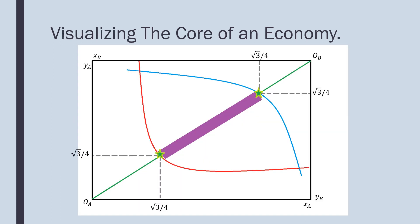In terms of visualizing this core, we have consumer A down in the bottom left and consumer B up in the right. We have our initial endowments which have been shifted to these points. This purple area here is the core of our economy. In terms of xa, that's between the square root of three all over four and one minus three all over four. That's the same thing for ya as well.